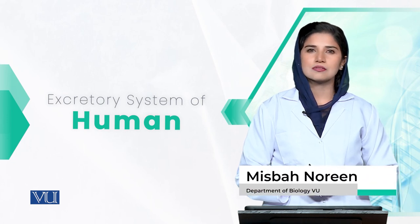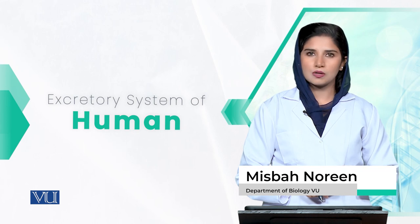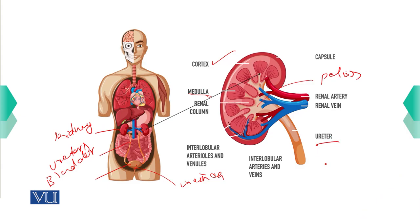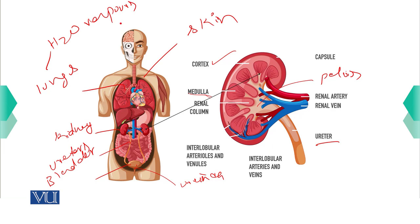Besides the kidneys, many other excretory organs are present in humans that play an important role in waste removal. Skin removes waste mostly in the form of sweat with the help of sweat glands. Lungs remove waste mostly through water vapors. Liver is where the metabolism of drugs and other substances occurs, and the resulting waste moves from the liver into the blood and then to the kidneys to be removed via urine. The intestine also plays a role in water absorption and water removal.